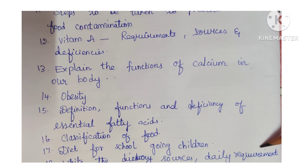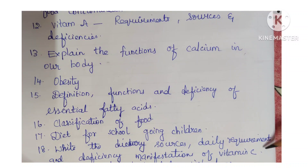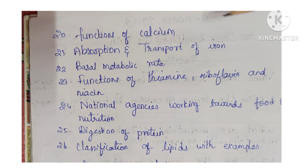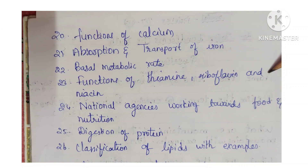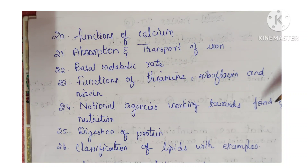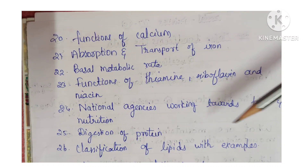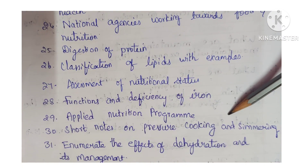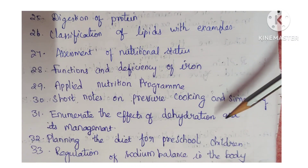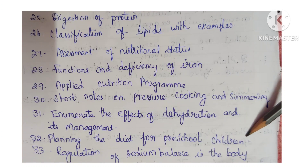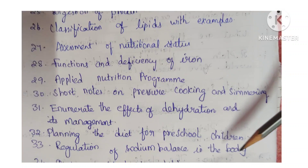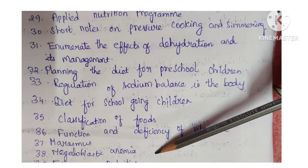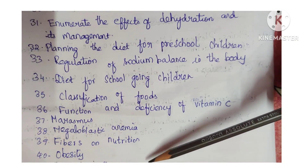Further topics include: Definition, Function and Deficiency of Essential Fatty Acids, Classification of Food, Diet for School Going Children, Dietary Sources, Daily Requirement, and Deficiency and Manifestations of Vitamin C, Fluid and Electrolyte Imbalance, Functions of Calcium, Absorption and Transport of Iron, Basal Metabolic Rate, Functions of Thiamine, Riboflavin and Niacin, National Agencies Working Towards Food and Nutrition, Digestion of Protein, Classification of Lipids with Examples, Assessment of Nutritional Status, Functions and Deficiencies of Iron, Applied Nutritional Program, Short Notes on Pressure Cooking and Simmering, Effects of Dehydration and its Management, Planning the Diet for Preschool Children, Regulation of Sodium Balance in the Body, Classification of Foods, Function and Deficiency of Vitamin C, Marasmus, Megaloblastic Anemia, Fibers in Nutrition, and Hypervitaminosis.